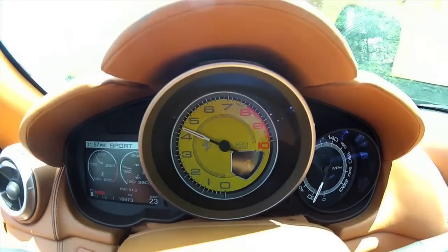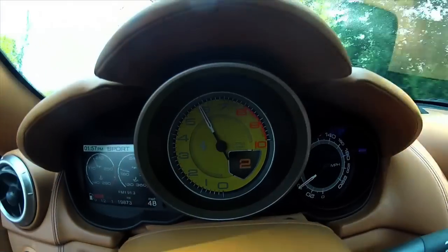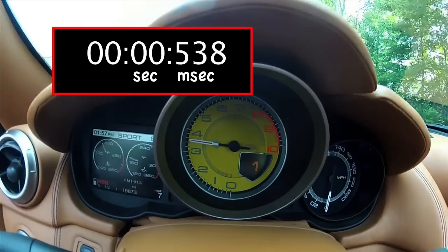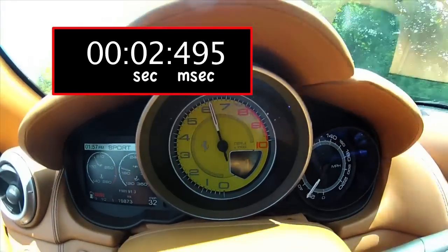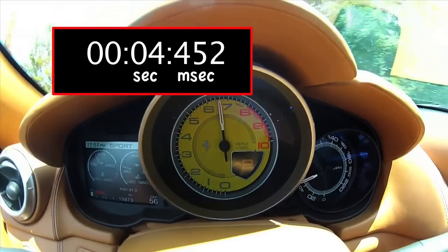To find the acceleration, we need to get the velocity which we can get from the speedometer, and the time we can get from a stopwatch. So the time it takes to get to 60 miles per hour is about 4.9 seconds.